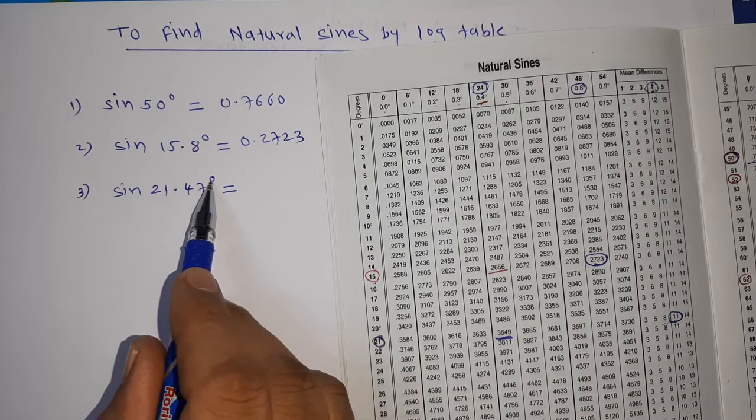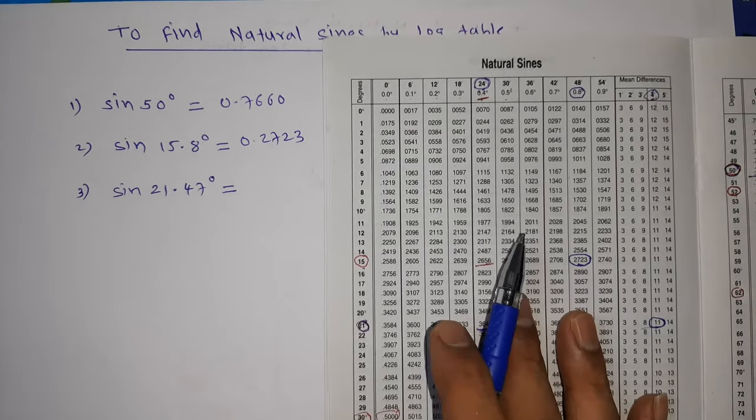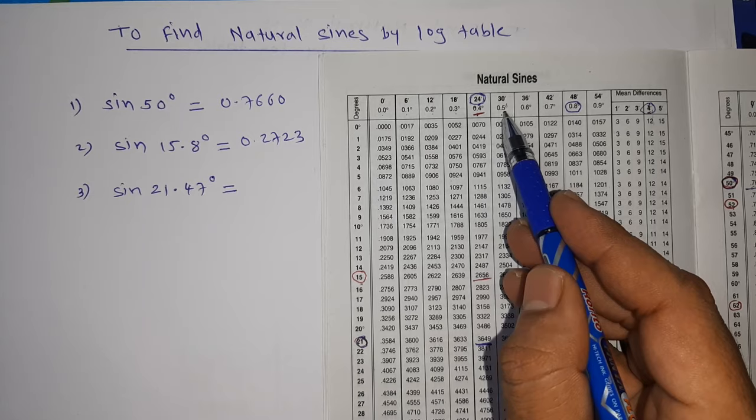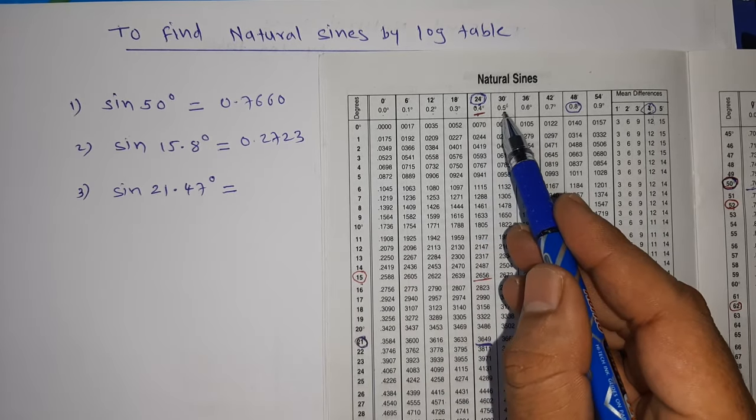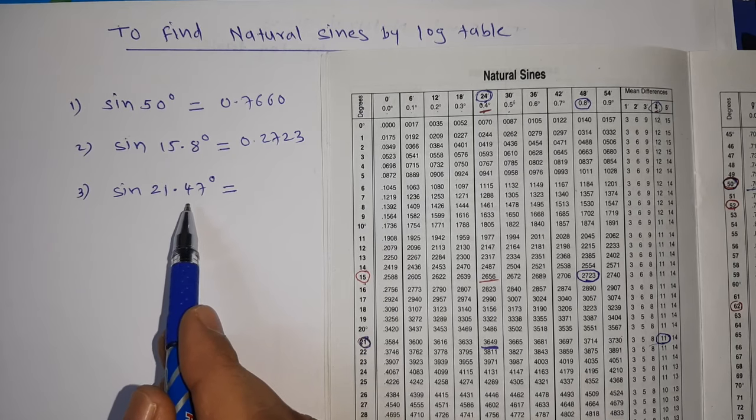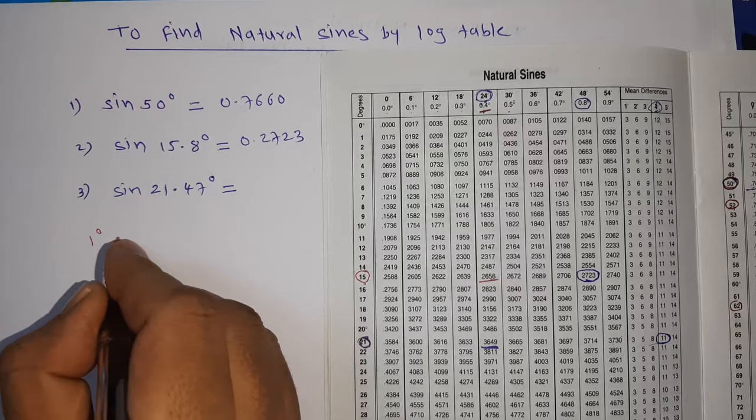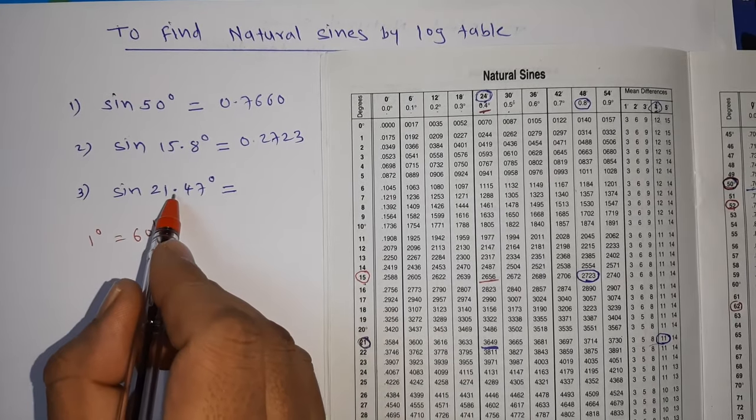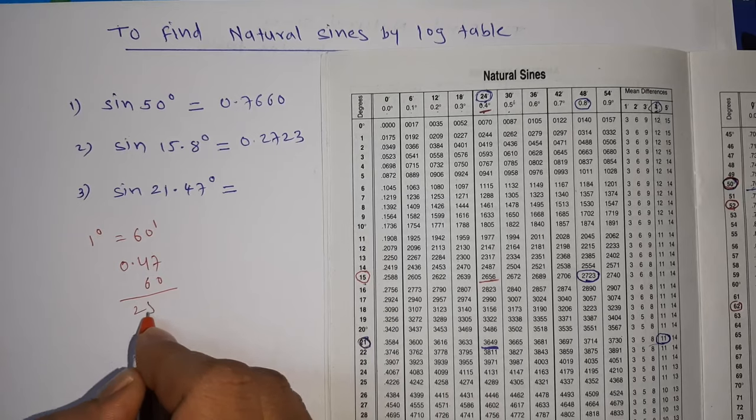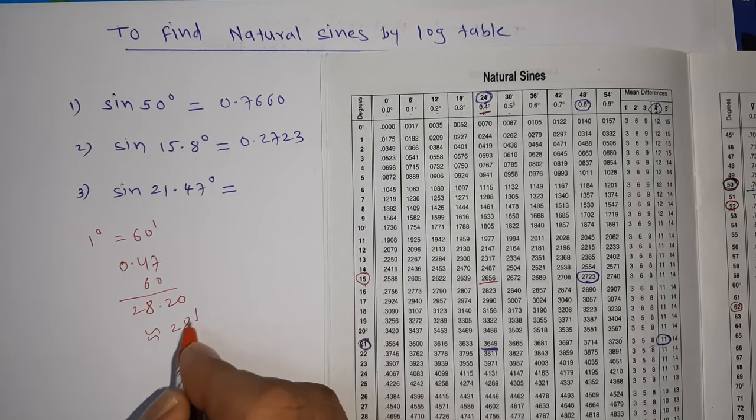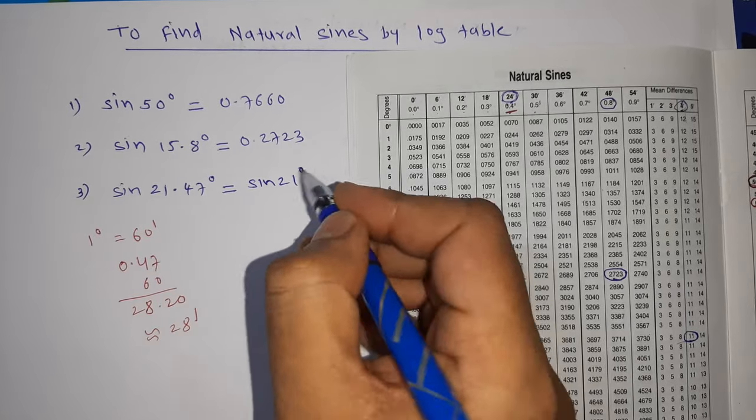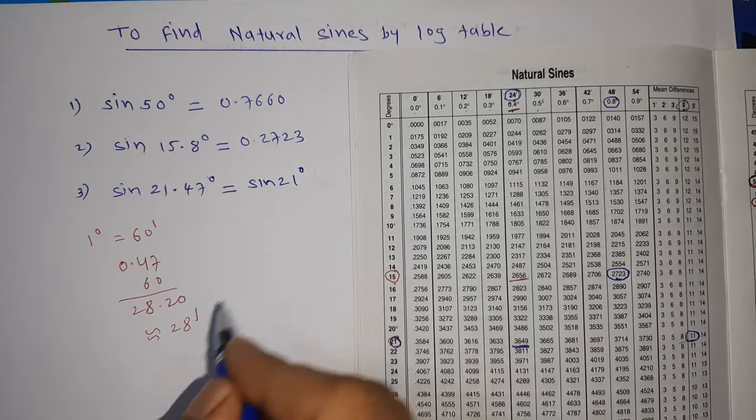Now 21.47°. In this case we will see carefully 0.47. If you see here, you can see 0.4 and 0.5, and this is 0.47, in between. In this case we have to go with minutes, so we have to convert 0.47 to minutes. How to convert: 1° equals 60 minutes. So this 0.47 will multiply by 60. You will get 28.20, approximately 28 minutes.